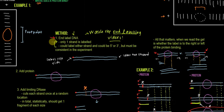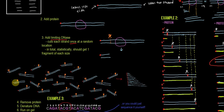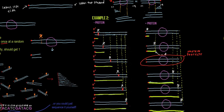After we end-label the DNA — and that was a big introduction because it's so important — then we add our protein so it binds, and then we treat with limiting DNase. The limiting DNase treatment cuts each strand once at some random location. Even though it's cutting at a random location, statistically you should get at least one fragment of each size in the total population. I've drawn here a population of DNAs that are all labeled the same way, being treated with limited DNase, so each DNA gets cut exactly once at some random location, giving a bunch of different-sized fragments each differing by one nucleotide.